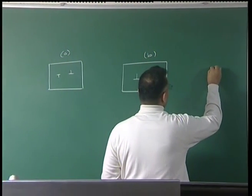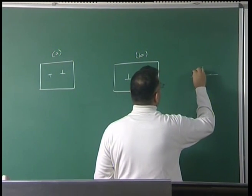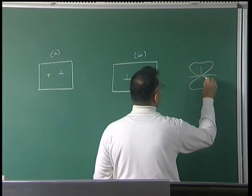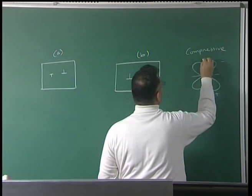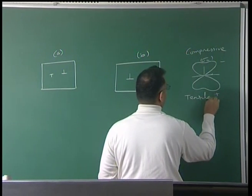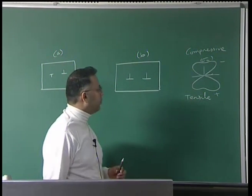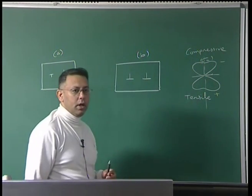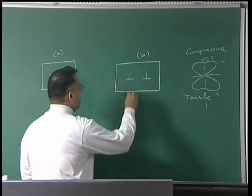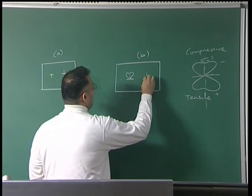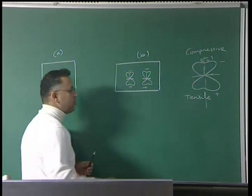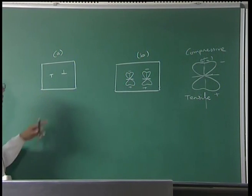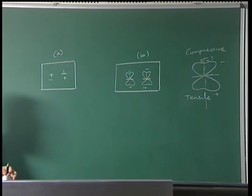If I plot the sigma-x stress field of a dislocation, I have iso-stress contours with a compressive region and a tensile region, displaying a mirror symmetry down the middle. If two dislocations have their compressive regions facing each other, those regions repel, and likewise for tensile regions — so those dislocations repel each other. On the other hand, a configuration where the compressive region of one aligns with the tensile region of the other means they attract each other via long-range stress fields.